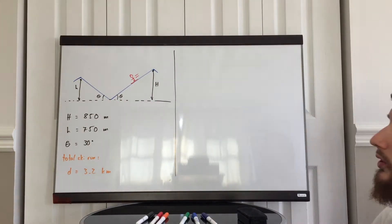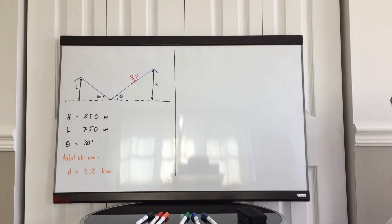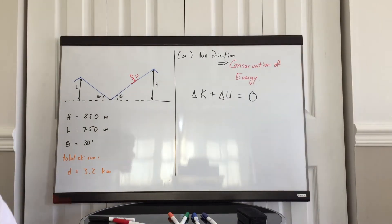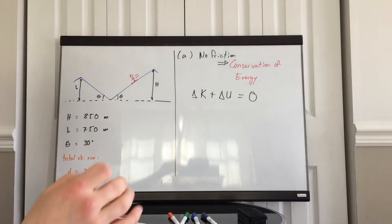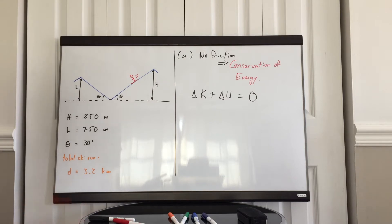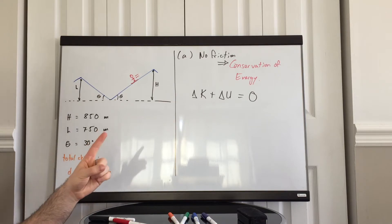In part a, we're told that we have no friction. That means that we have no external forces acting on the skier. The only thing that's happening is him and gravity. So we have conservation of energy. Now what we must do is determine which points are important in this situation. The two points that are important are at the top of the higher peak and at the top of the lower peak. We don't care what's happening in between. We just care about those two peaks.